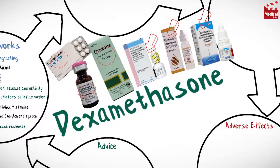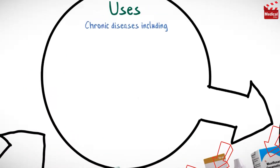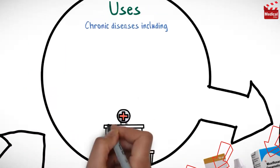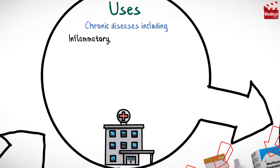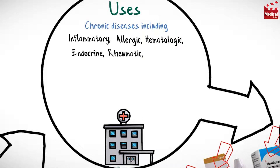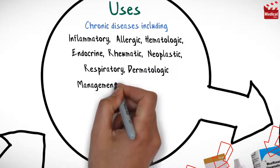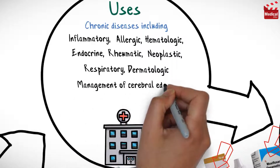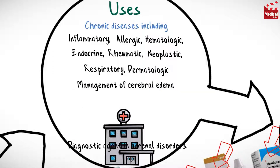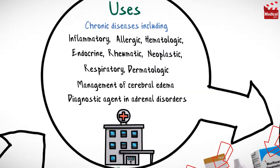Dexamethasone is used systemically and locally in a wide variety of chronic diseases including inflammatory, allergic, hematologic, endocrine, rheumatic, neoplastic, respiratory, and dermatologic conditions. It is also used in the management of cerebral edema and as a diagnostic agent in adrenal disorders.